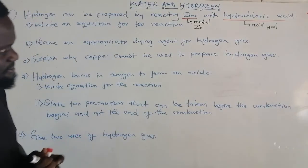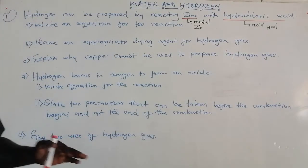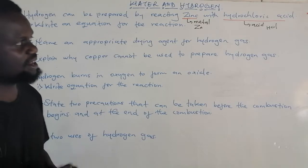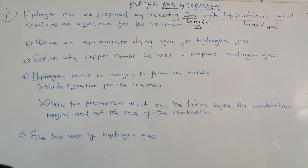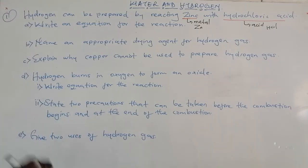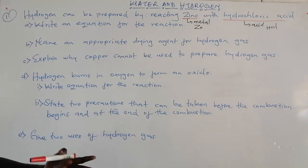When a metal reacts with an acid, it forms two products: salt and hydrogen gas.